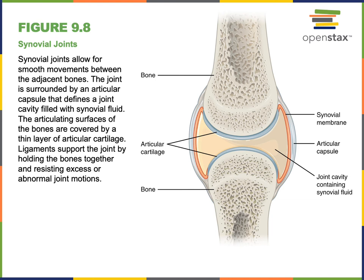Synovial joints are a structural category characterized by an articular capsule of fibrous connective tissue surrounding a joint cavity filled with synovial fluid. The inner synovial membrane produces synovial fluid, which lubricates the joint, and the ends of articulating bones are covered with articular cartilage to protect the bone. Synovial joints are all freely mobile and are functionally categorized as diarthroses.